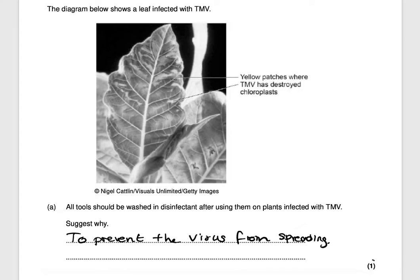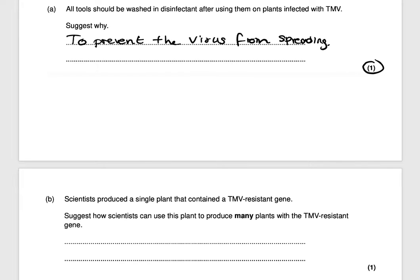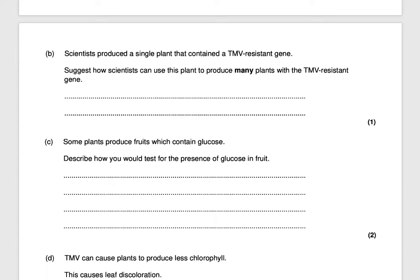Next question: scientists produced a single plant containing a TMV-resistant gene. Suggest how scientists can use this plant to produce many plants with the TMV-resistant gene. You need to clone that single plant. Methods of cloning include tissue culture or taking plant cuttings — writing tissue culture would get you one mark.